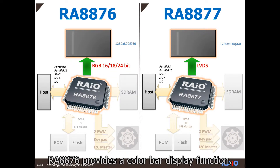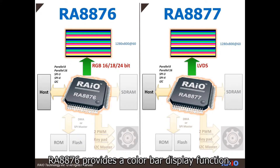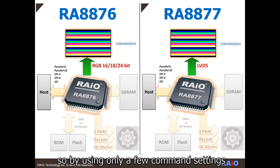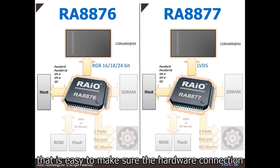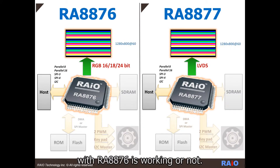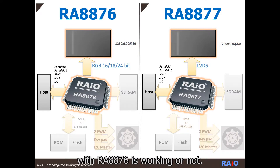RA8876 provides a color bar display function, so by using only a few common settings, it is easy to verify whether the hardware connection with RA8876 is working or not.